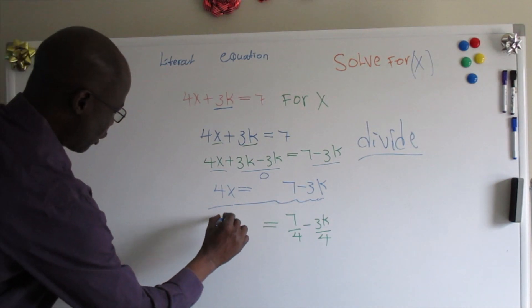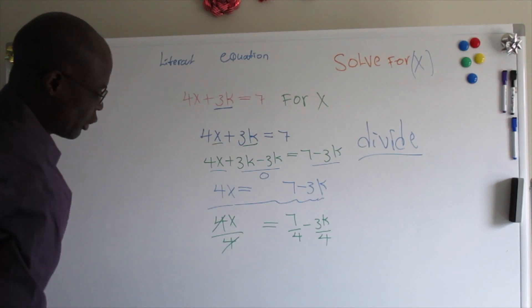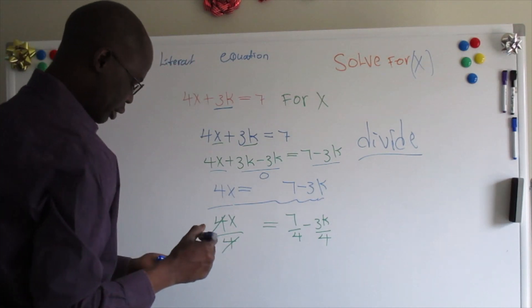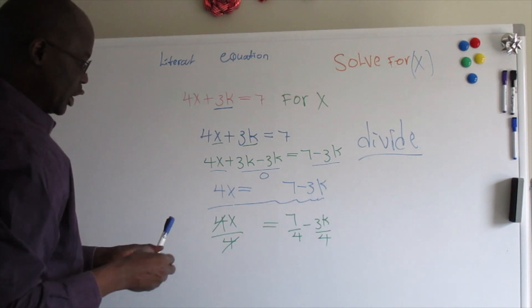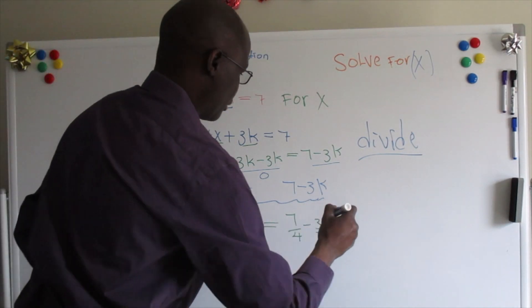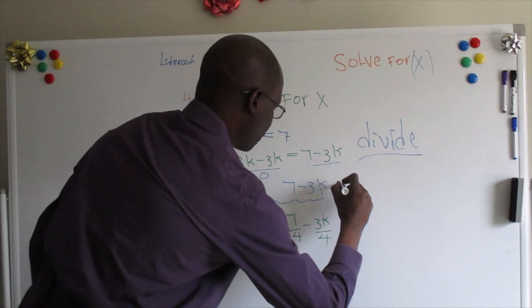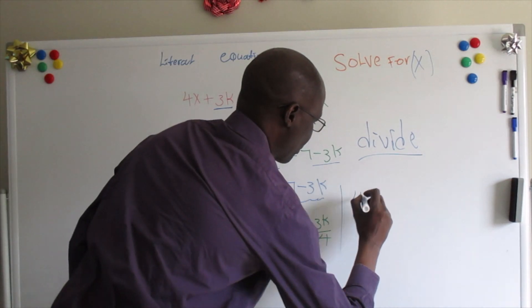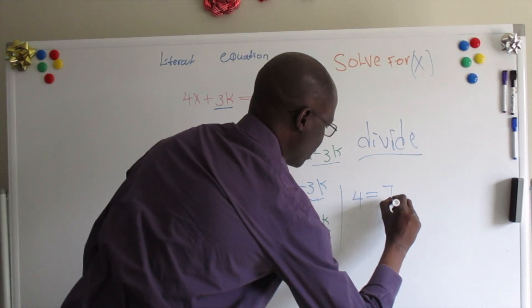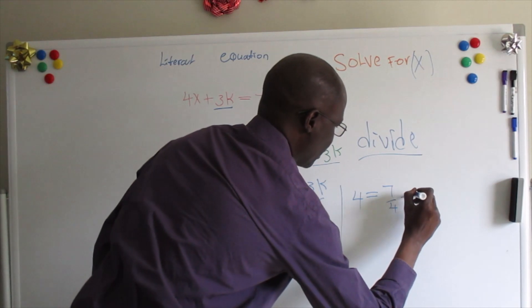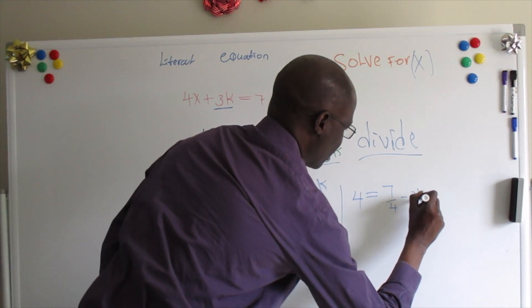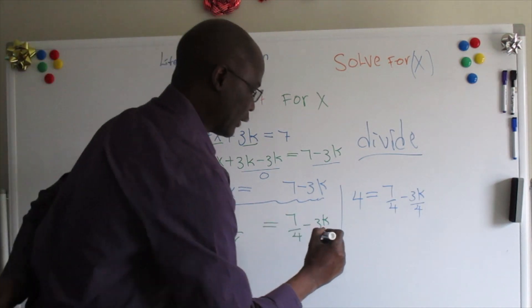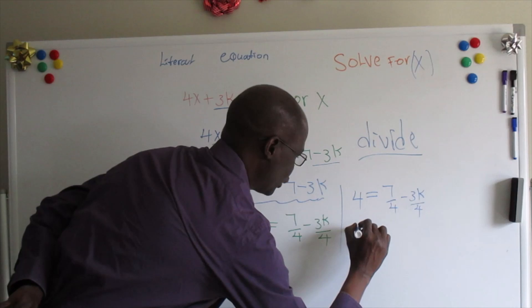As we know, 4 divided by 4 gives us x. So the equation now looks like this: x equals 7 divided by 4 minus 3k divided by 4.